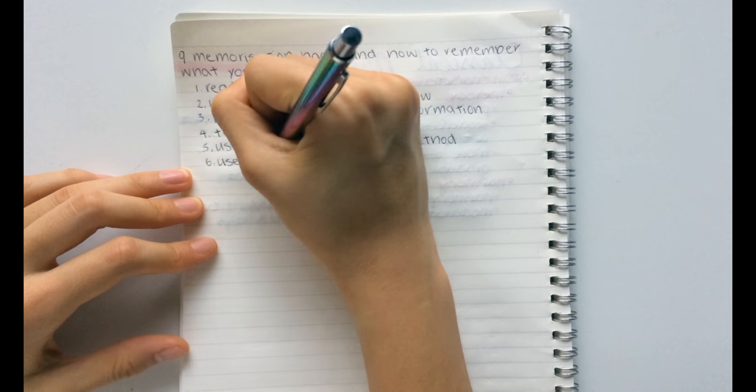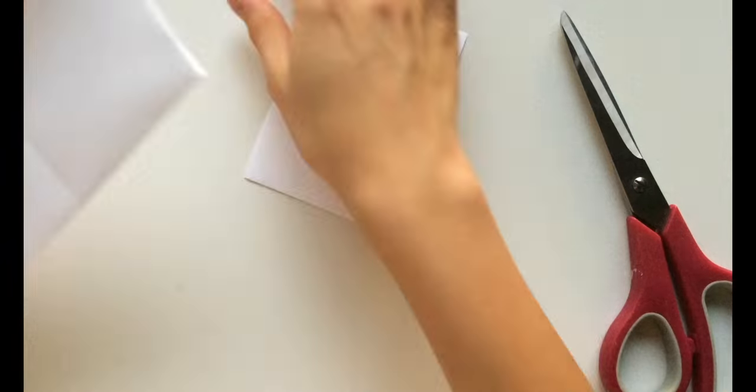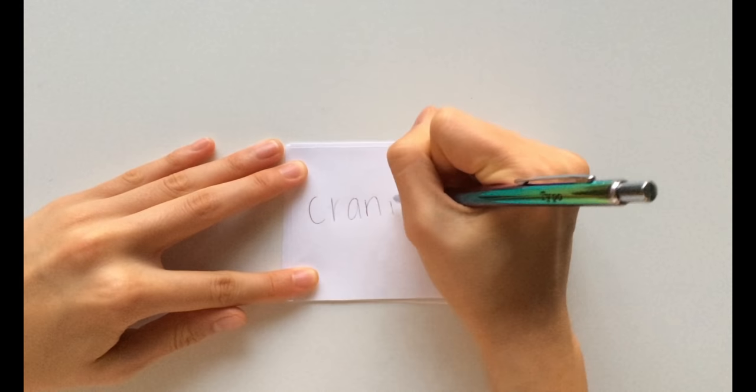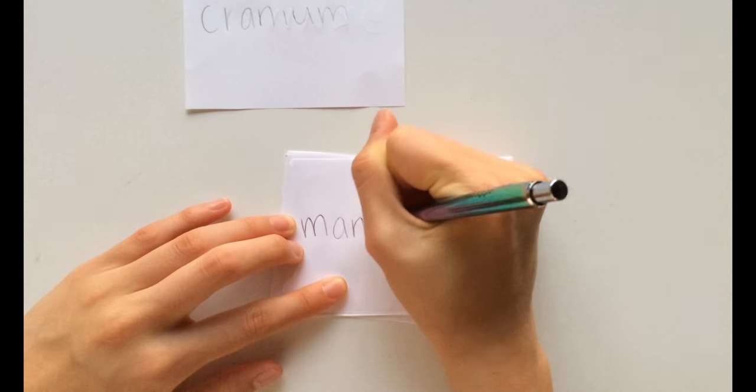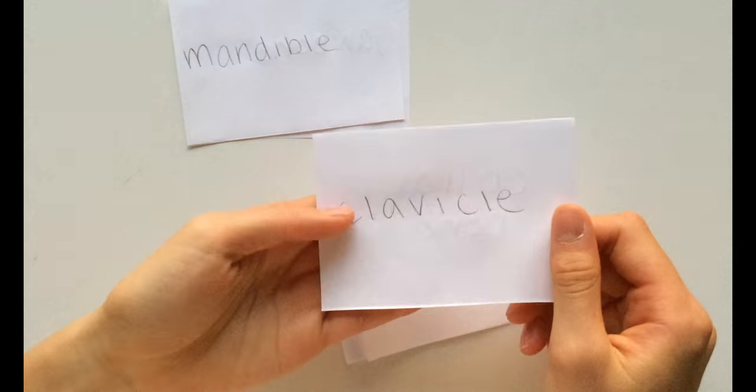The sixth hack is to use flashcards. When memorizing information like the bones of the human body, using flashcards is a great way because you are repeating the information over and over again. Using flashcards with the spaced repetition method is a great way to memorize information.